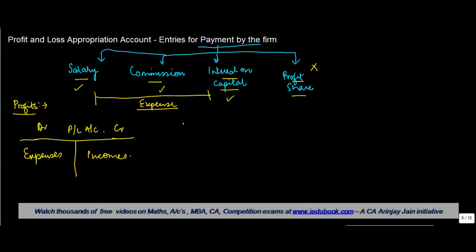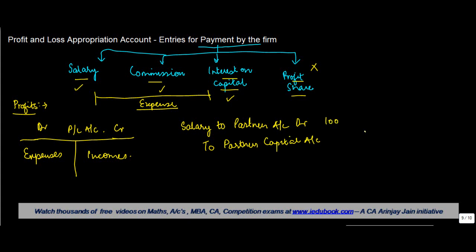You basically debit the expense — that's the basic rule of accounting. So let's say we have salary: we would debit 'Salary to Partner Account' and credit 'Partners' Capital Account' for whatever that number might be. Similarly, just like any other expense, you pass an entry: debit the Salary to Partner Account, which is an expense account in so far as appropriation is concerned, and credit the Partners' Capital Account.